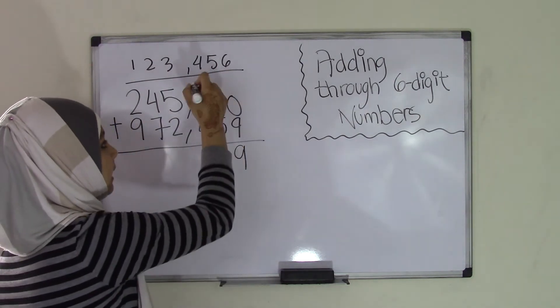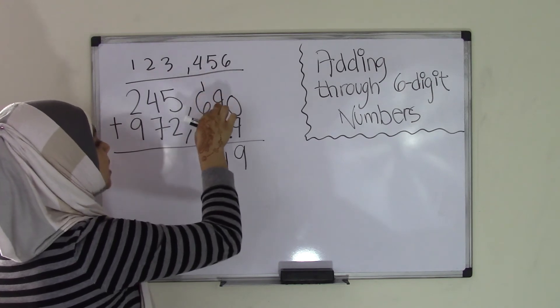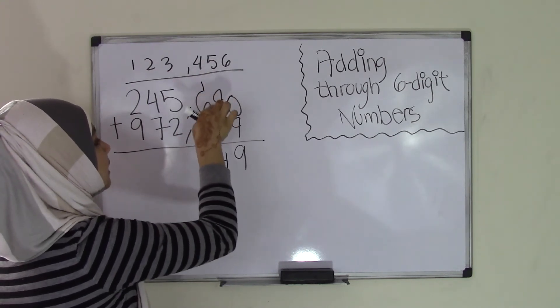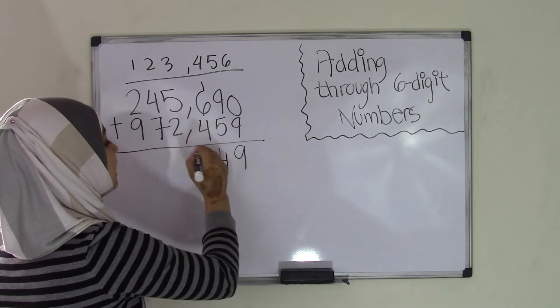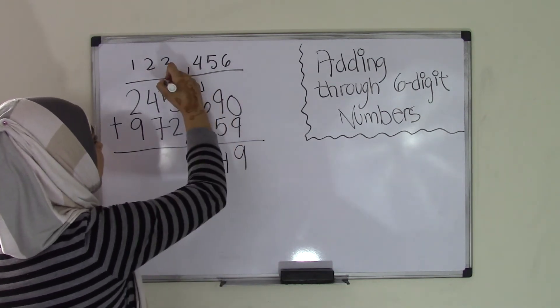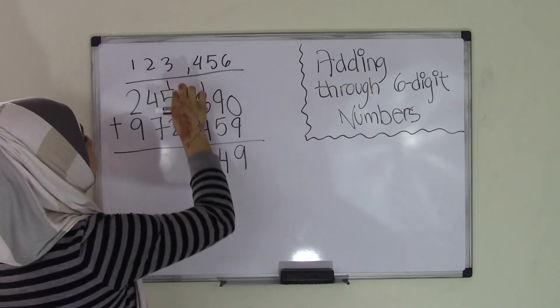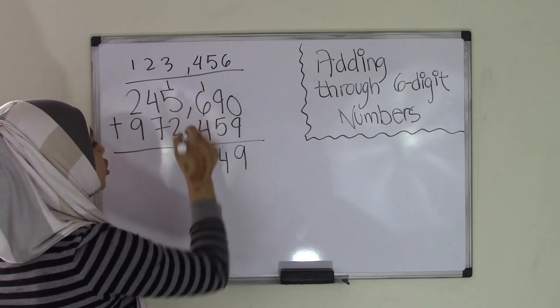but we carry the 1 up here and now we have 1 plus 6 plus 4. So 1 plus 6 is 7 plus 4 is 11. 1, carry that other one. So 1 plus 5 is 6 plus 2 is 8.